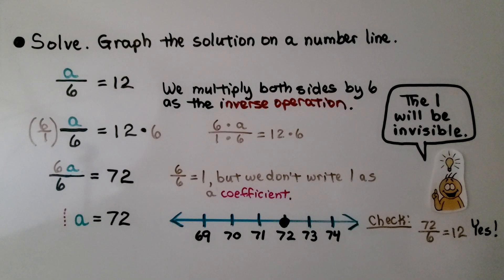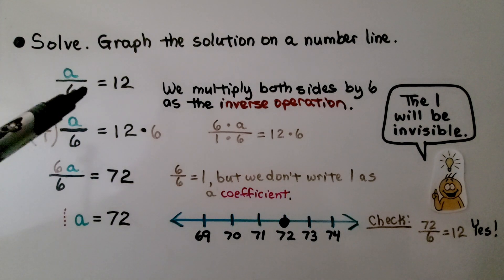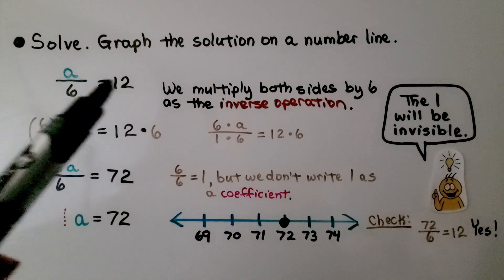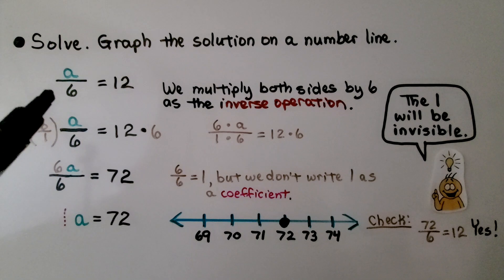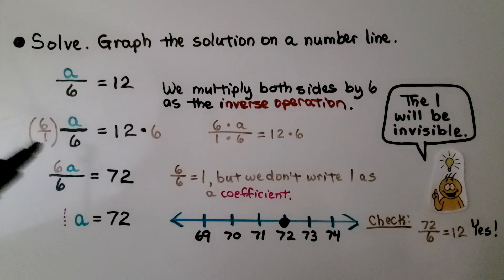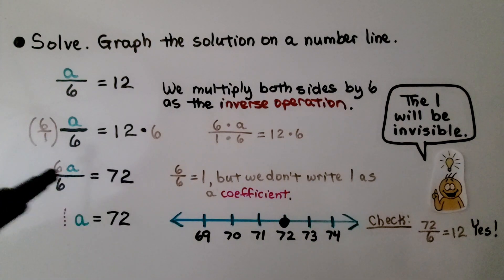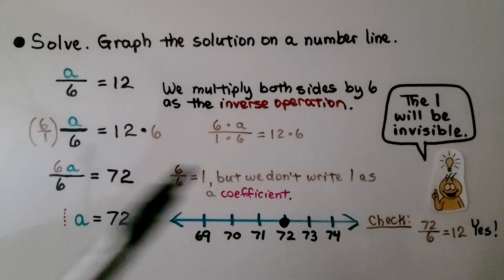Here it's telling us to solve and graph the solution on a number line. We have a divided by 6 is equal to 12. We multiply both sides of the equation by 6 as an inverse operation. We have a 6 over a 1 to make it easy to multiply straight across. That's 6 times a over 1 times 6. And on the other side, we have 12 times 6.